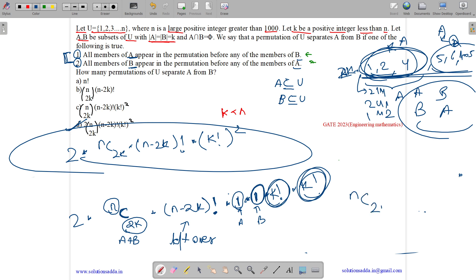We can write nC2k as n and 2k, this is the same notation as combination. So we have nC2k into 2 into n minus 2k factorial into k factorial square. So answer is option D.